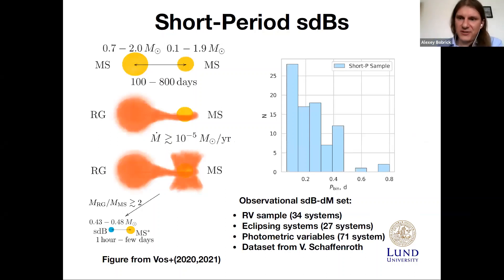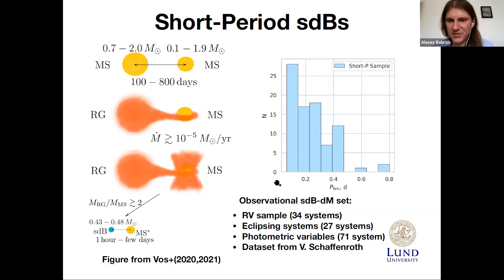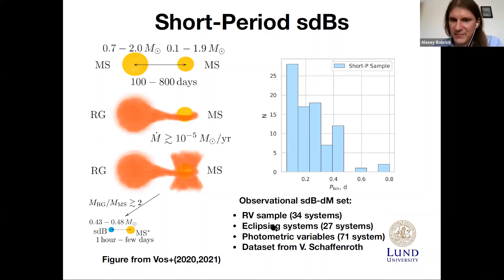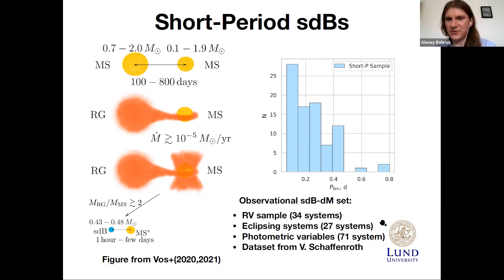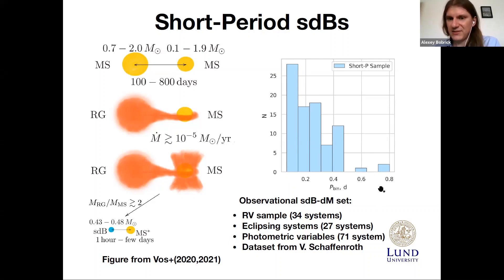This led us to apply the same ideas to model the short-period population, which forms when the red giant transfers mass to the main sequence star through a common envelope phase, with the red giant core nonetheless igniting helium to become a subdwarf B-star. Right now, the observational set of short-period subdwarf B-stars comprises approximately 80 systems in three subsets: the radial velocity sample identified spectroscopically; eclipsing systems with more detailed parameters like log g; and photometric variables where periods are inferred from photometric variability.